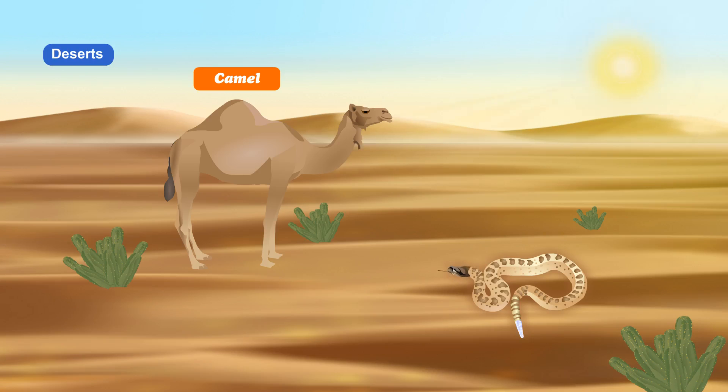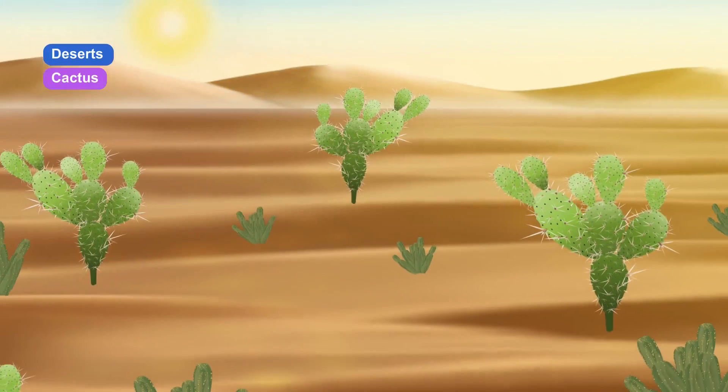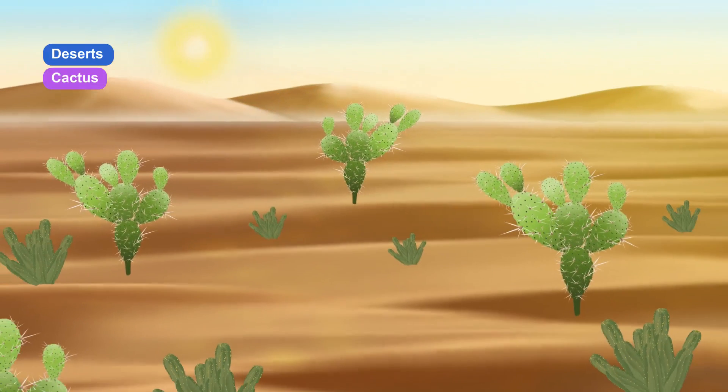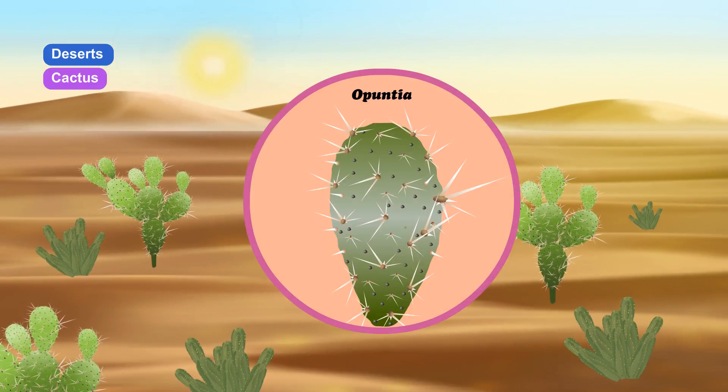Animals like the camel and rattlesnakes, and plants like cactus or opuntia are found in the deserts.